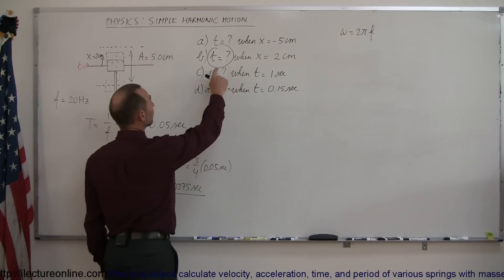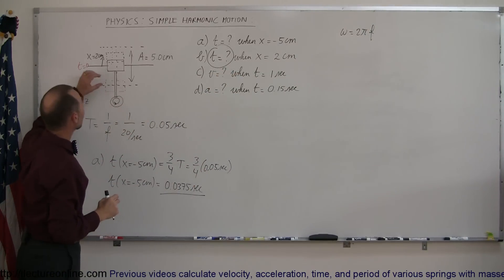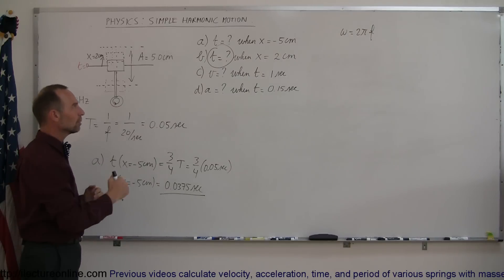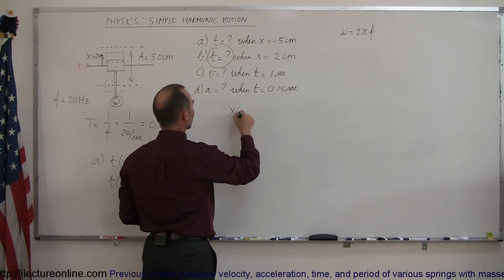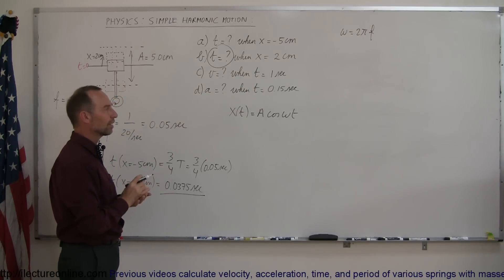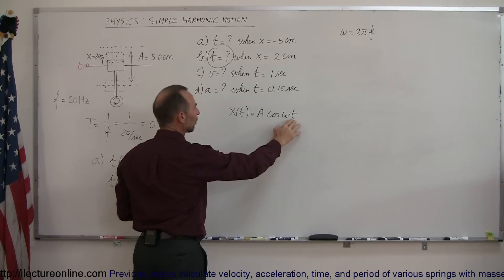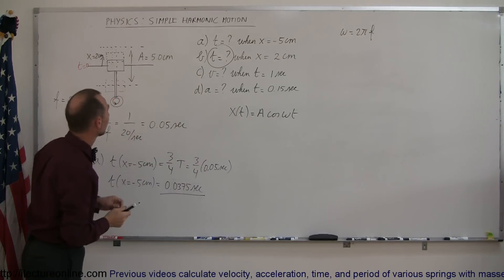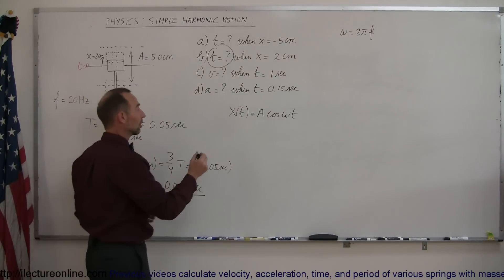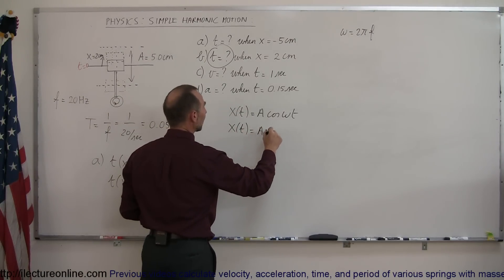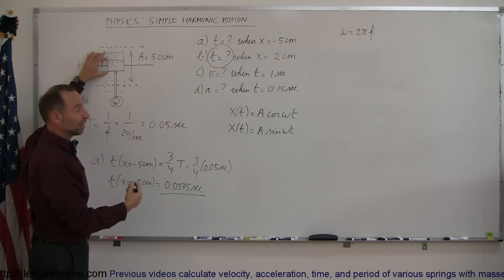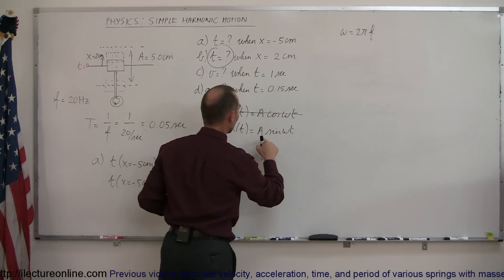The next part asks us to find the time when x equals 2 cm — how long it takes to go from the equilibrium point to 2 cm above it. For that, we need the equation describing the motion. We could use x as a function of time equals A times cosine of omega-t, but cosine of 0 is 1, which would place x at maximum displacement at t equals 0. Instead, since the object starts at equilibrium, we need the sine function: x equals A times sine of omega-t, because sine of 0 is 0.